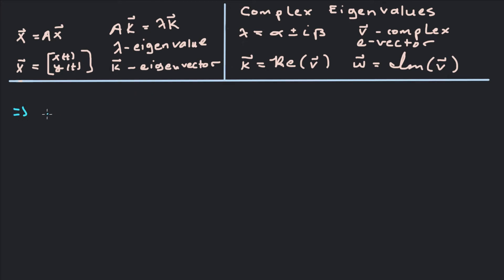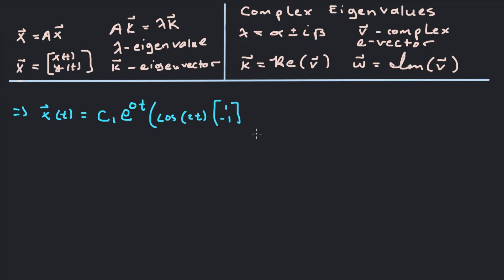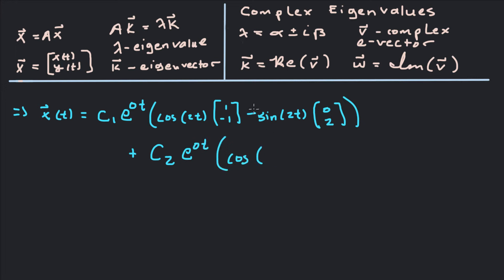So x of t is going to equal c1·e^(0·t)·[cos(2t)·K − sin(2t)·W] plus c2·e^(0·t)·[cos(2t)·W + sin(2t)·K]. Substituting K = [1; −1] and W = [0; 2]: x(t) = c1·[cos(2t)·(1,−1) − sin(2t)·(0,2)] + c2·[cos(2t)·(0,2) + sin(2t)·(1,−1)].